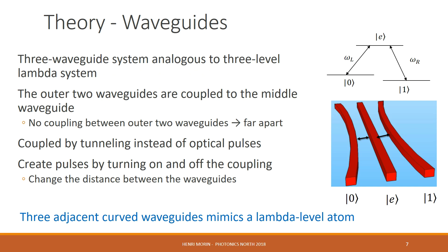So it turns out that the three-waveguide system is completely analogous to the three-level lambda system. In our case, we have three waveguides: we have the zero, one, and excited waveguides. The outer two are coupled to the middle waveguide, and there is no coupling between the outer two since they are far enough apart to not have any coupling.